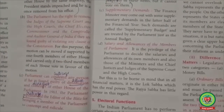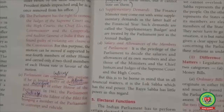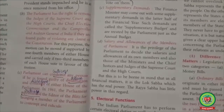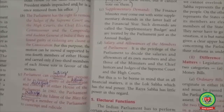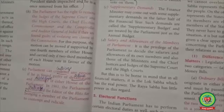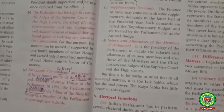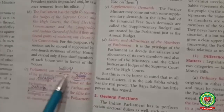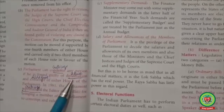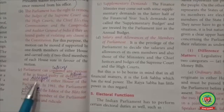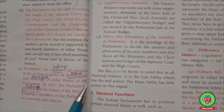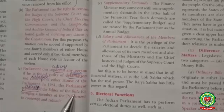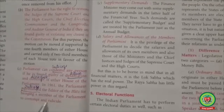Judges of the Supreme Court, High Court, Chief Election Commissioner, and the Comptroller and Auditor General of India can be removed from their office by a resolution passed by Parliament with a two-third majority in both Lok Sabha and Rajya Sabha, on the grounds of proved misbehaviour or incapacity. Parliament can also condemn (means criticize) any person found guilty of defamation (means abuse) and contempt (means disrespect) of either house of Parliament.